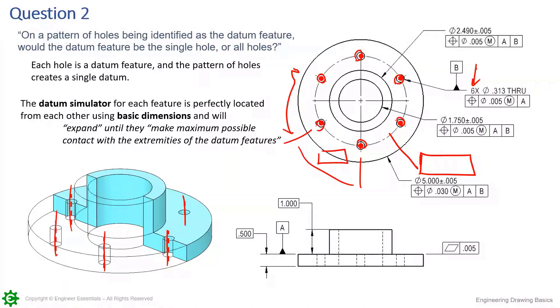Essentially what you're saying is my basic dimensions define these true positions. These true positions are CAD perfect, and that's where I put my datum simulators. My datum simulators are going to expand centered at these true positions. They're going to expand slowly, simultaneously, each one at the exact same time until they hit the high points of each one of these cylinders.